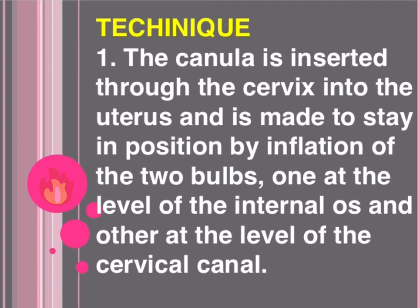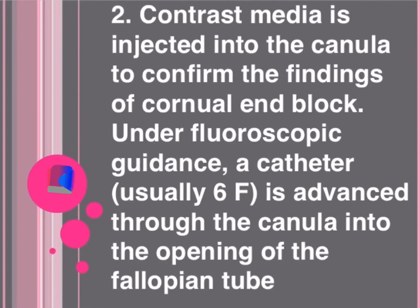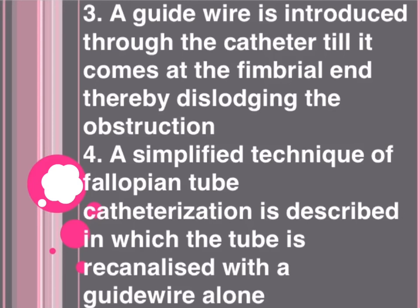Under fluoroscopic guidance, a catheter, usually 6F, is advanced through the cannula into the opening of the fallopian tube. Step three: the guide wire is introduced through the catheter until it reaches the fimbriae, thereby dislodging the obstruction. A simplified technique also exists in which the tube is recanalized with a guide wire alone.